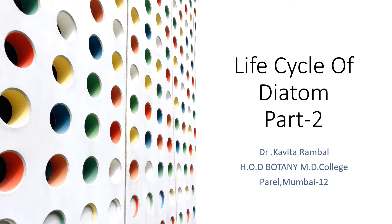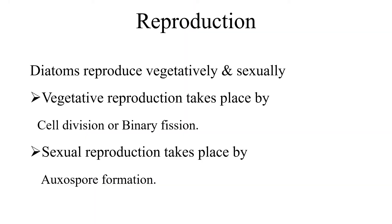Hello students, we start with the life cycle of diatoms, part 2. Now we talk about reproduction. Diatoms are reproduced vegetatively and sexually. Asexual reproduction is completely absent in diatoms. Vegetative reproduction takes place by cell division, some people call it binary fission, and sexual reproduction takes place by the formation of a special type of spore called auxospore.